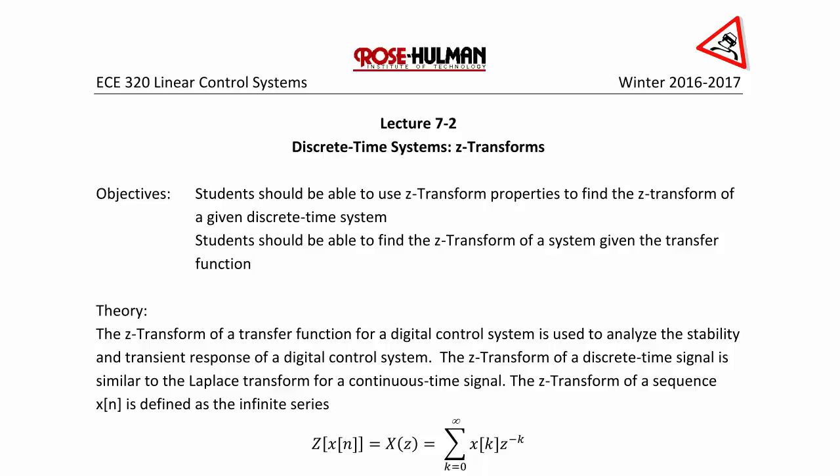The Z-transform of a discrete time signal is similar to the Laplace transform for a continuous time signal. The Z-transform of a sequence x of n is defined as the infinite series: X of z equals the summation from k equals 0 to infinity of x of k times z to the negative k.